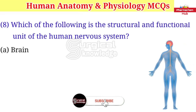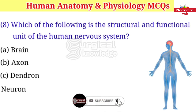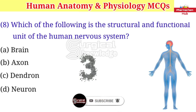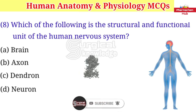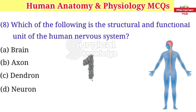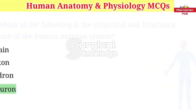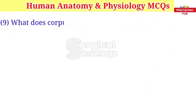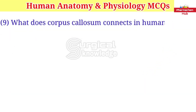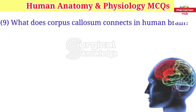Which of the following is the structural and functional unit of the human nervous system? A. Brain B. Axon C. Dendron D. Neuron. Right answer is neuron.